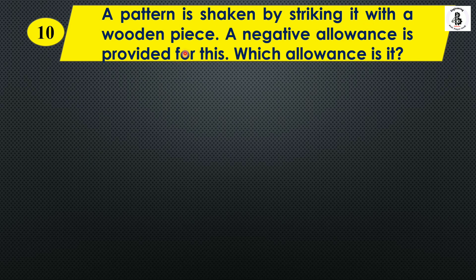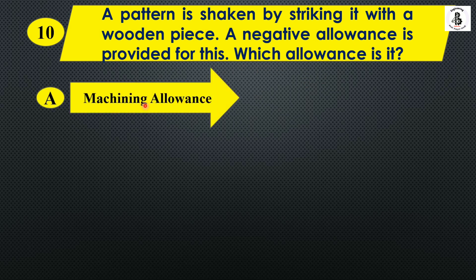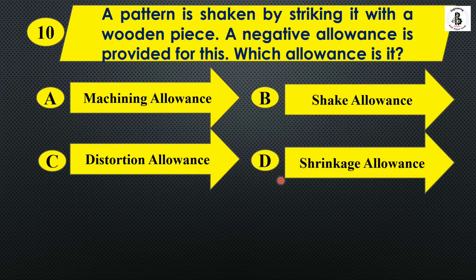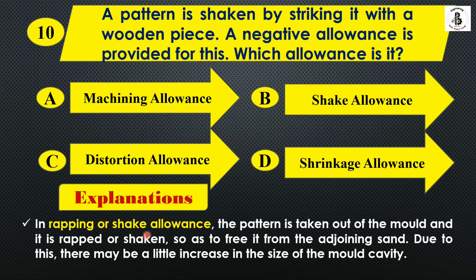Question ten: A pattern is rapped by striking it with a wooden piece and a negative allowance is provided for this. Which allowance is it? Option A: Machining allowance, Option B: Sec allowance, Option C: Distortion allowance, Option D: Shrinkage allowance. In rapping or sec allowance, the pattern is taken out of the mold and rapped to free it from the adjoining sand. This causes a slight increase in the size of the mold cavity, enlarging its dimensions. The answer is Option B: Sec allowance.